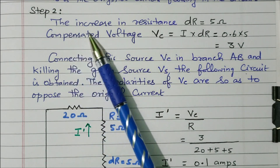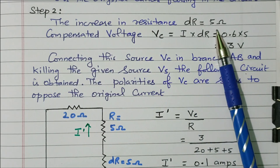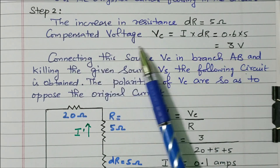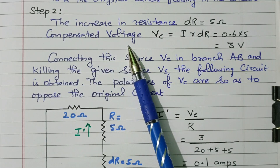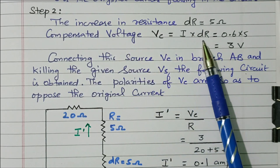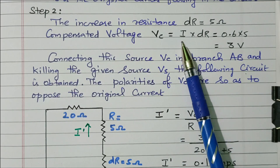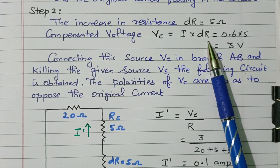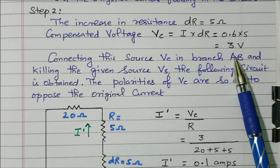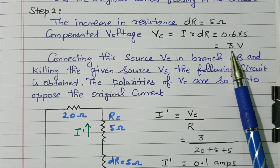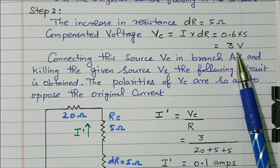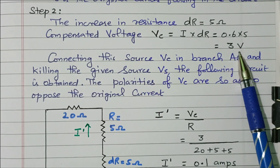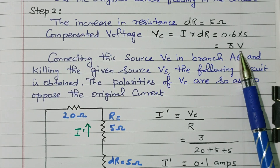In step 2, the increase in resistor ΔR equals 5 ohm. Due to this change in resistor, the compensation voltage formula is Vc = I × ΔR. Here I is the original current and ΔR is the change in resistor (5 ohm). So Vc = 0.6 × 5 = 3 volts. Due to the change in resistor, there will be an opposing voltage called the compensation voltage, which has a value of 3 volts.